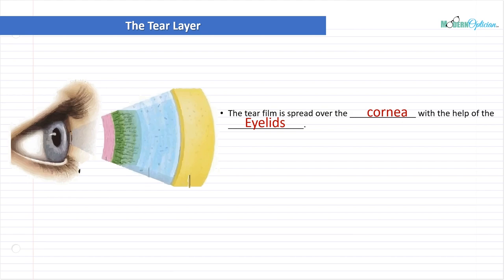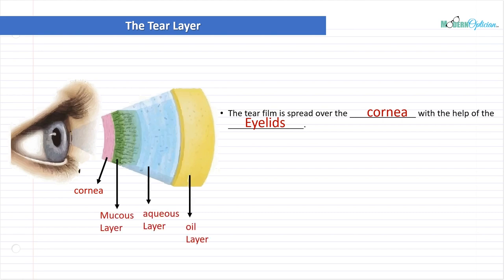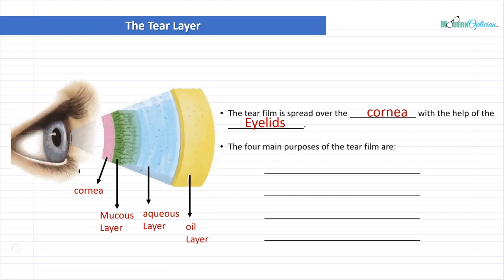The eyelids, through all the involuntary blinks that we do, serve to clean away debris and keep everything fresh. However, they are also spreading tears along the cornea and also the conjunctiva, which needs to be lubricated as well. The bottom pink layer in the diagram we can label as the cornea. Next, the mucus layer, the aqueous layer, and the oil layer — that's the sandwich of the tear layer. This is always the way it looks; this is the way it needs to look in order to function properly.